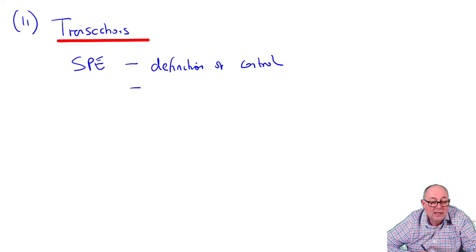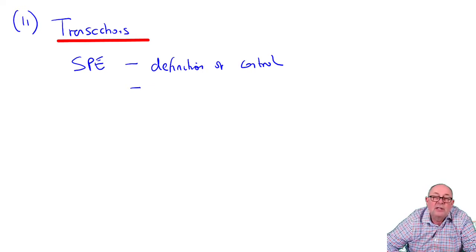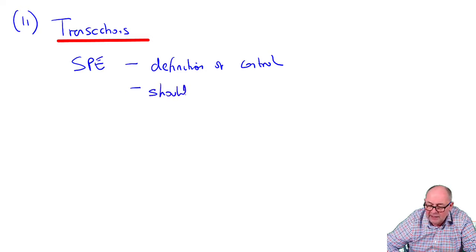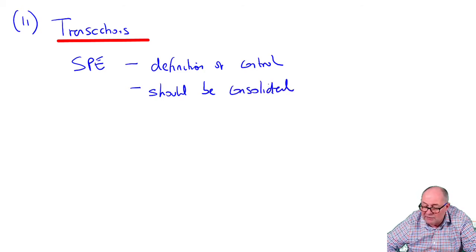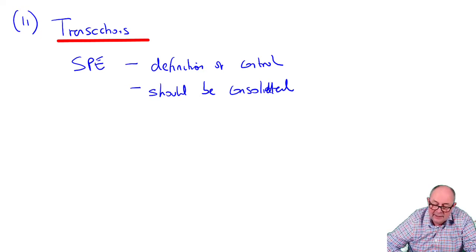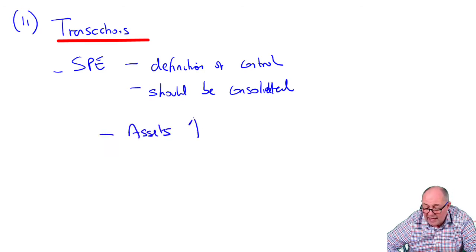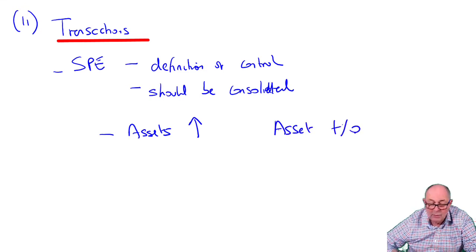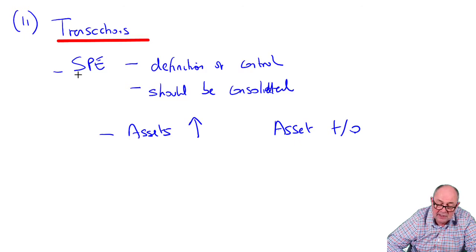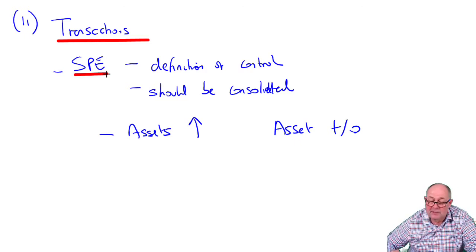In terms of knowledge, you will find in the answer there will be some sort of definition of control. However you want to refer to it, this building should be consolidated. At the end of the day, it should be consolidated. It should be included in the balance sheet. What the directors have done is actually wrong. If they consolidate the building, then what's going to go up is the assets. If the assets go up, then the asset turnover will go down. So there's something about the special purpose entity.